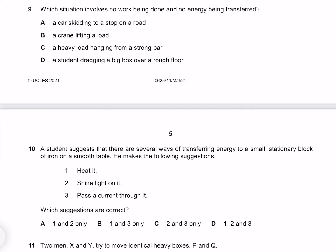Which situation involves no work being done and no energy being transferred? A car skidding to a stop on a road is going to see kinetic energy being transferred into heat and sound, so it's not A. A crane lifting a load is going to see an increase in gravitational potential energy, so it's not this one either. A heavy load hanging from a strong bar implies that it's not moving and no implication of energy being transferred. A student dragging a big box over a rough floor is similar to our car skidding to a stop, where we have energy being transferred into heat and sound, so we know it's not D. Therefore it must be C.